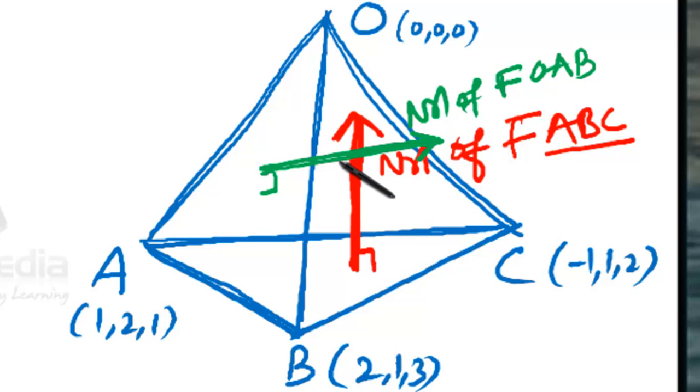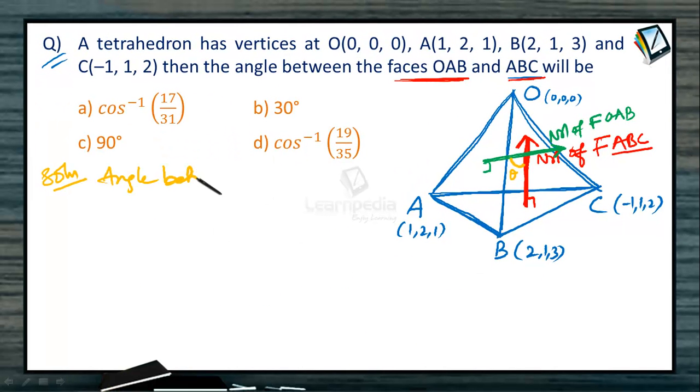So you require the angle between them, that is theta. The angle between the faces equals the angle between the normals. The solution is: angle between face ABC and face OAB equals the angle between their normals to the faces.